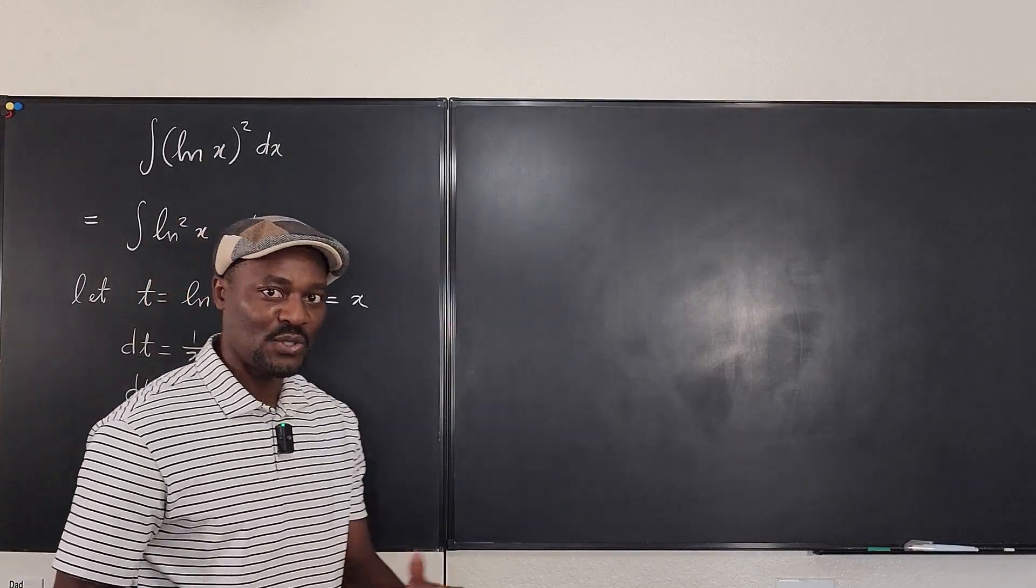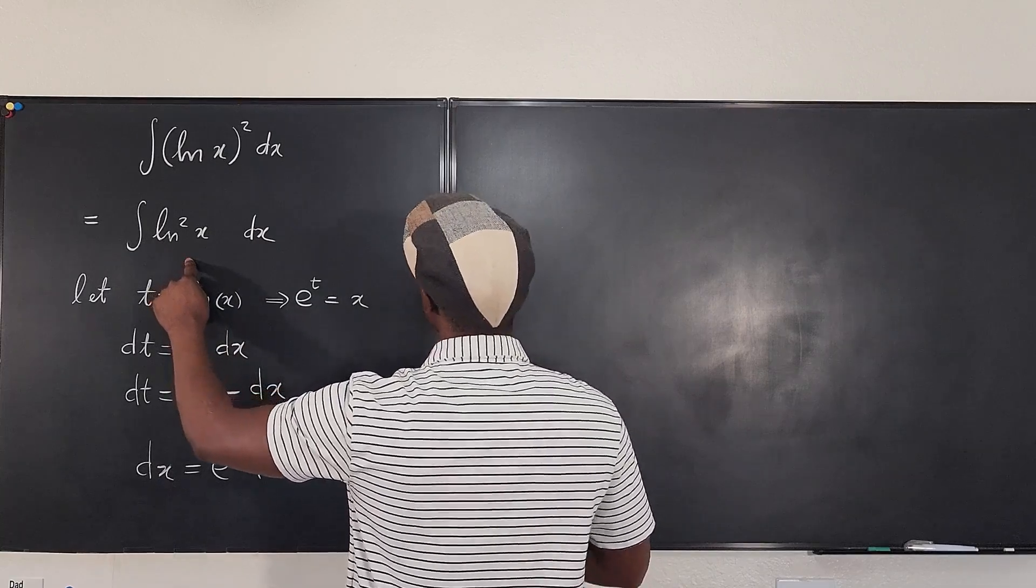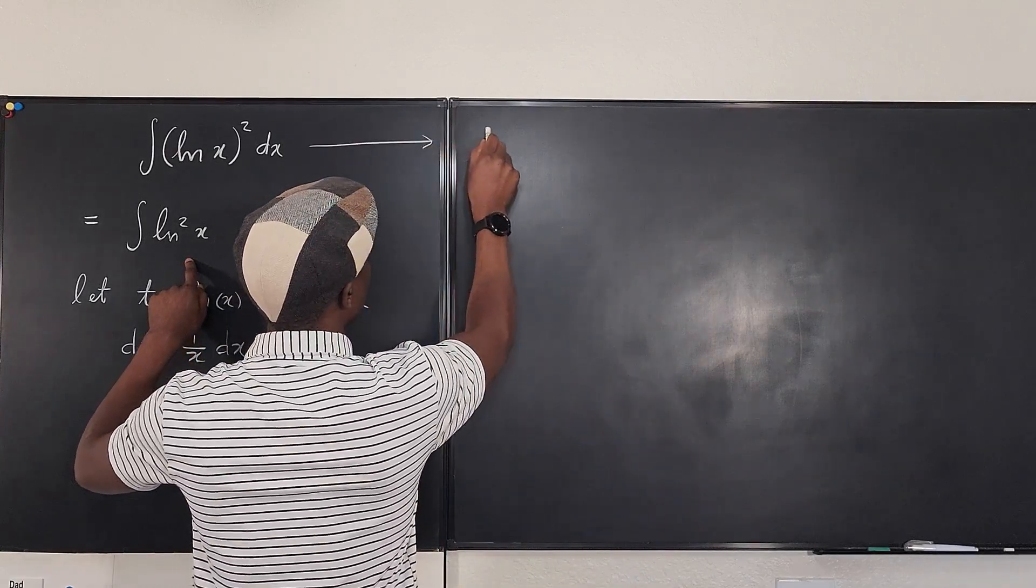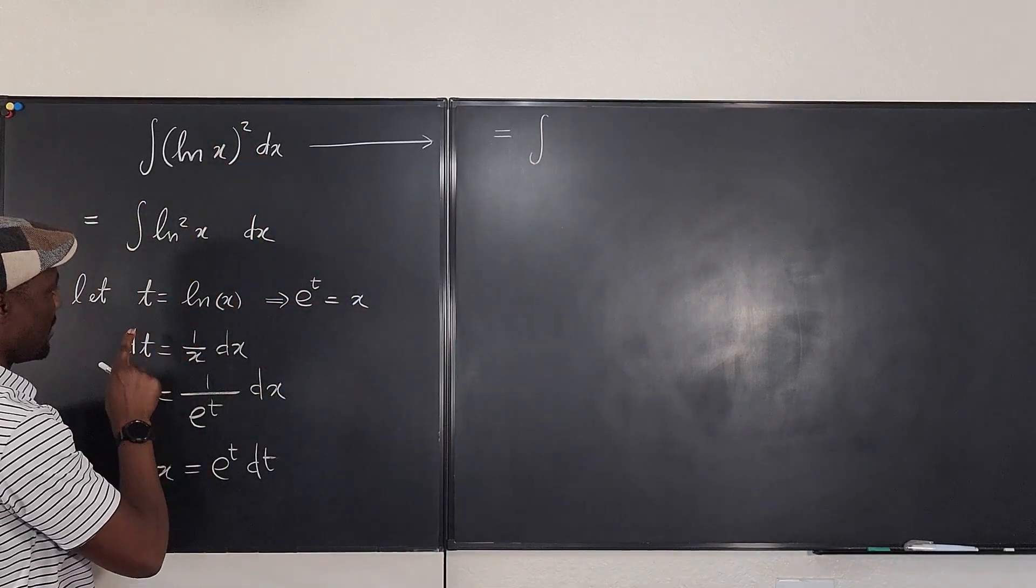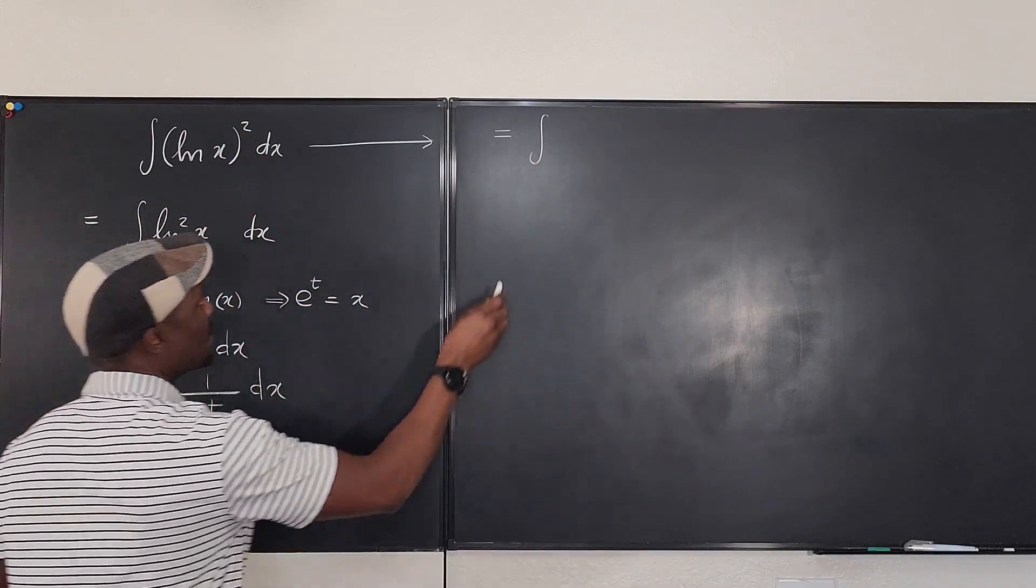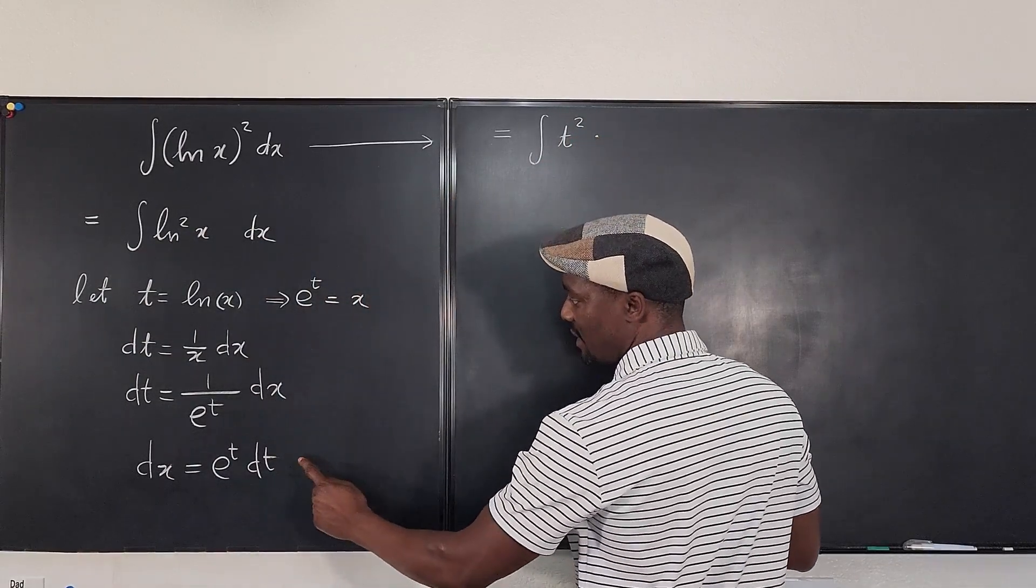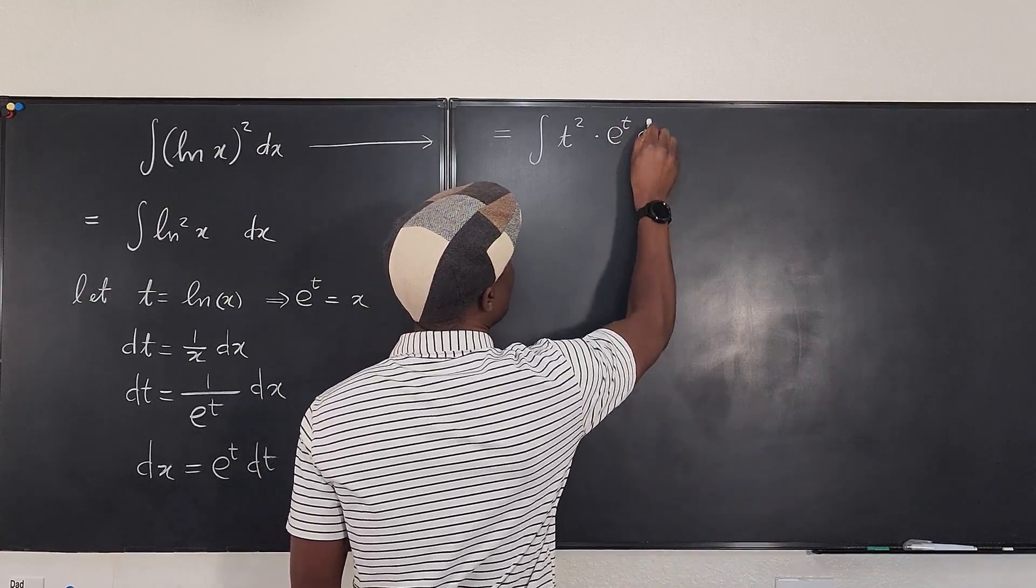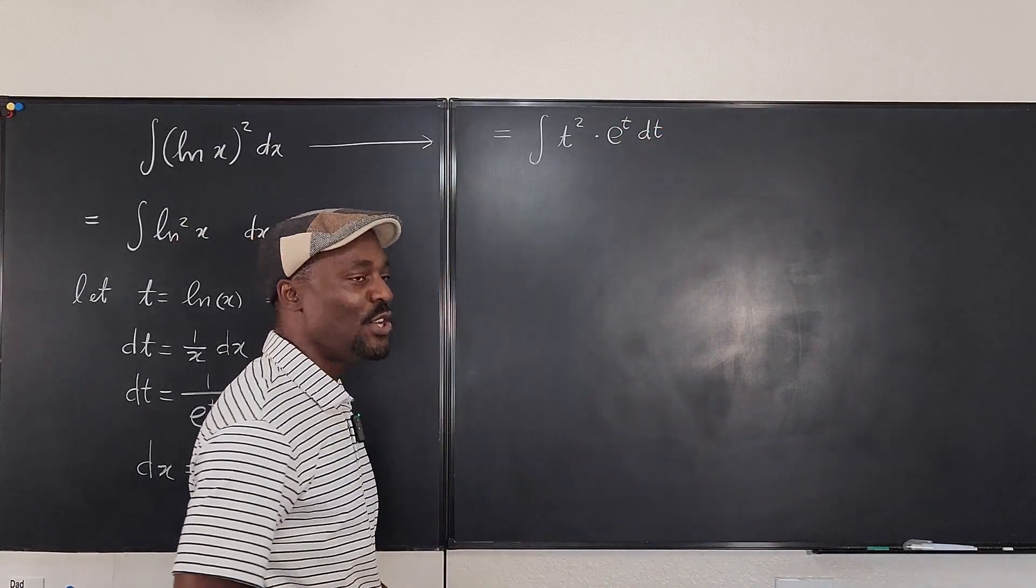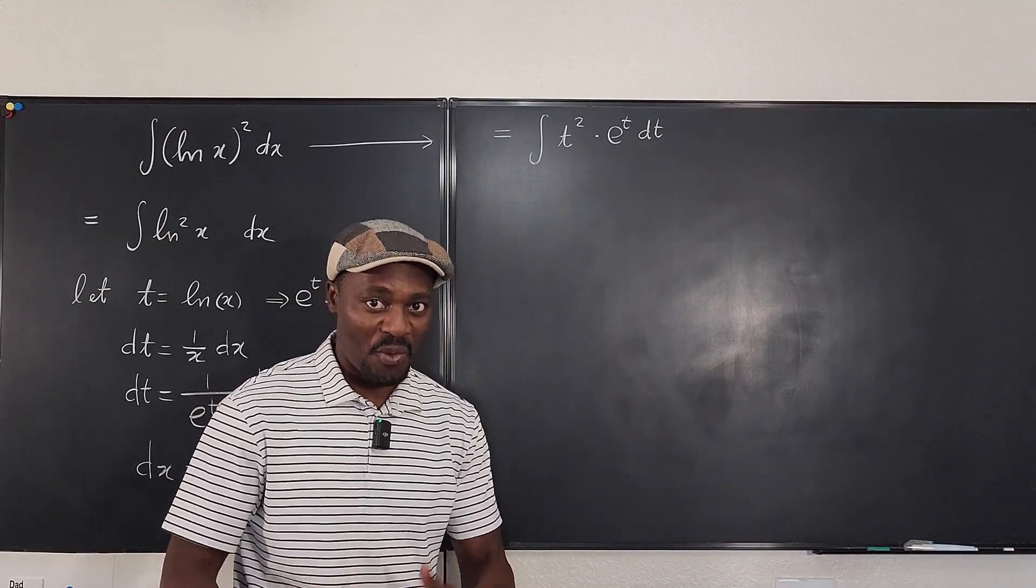So now I'm ready to do my integration. This is going to be the integral of ln of x squared. What's ln of x again? It's t. So it's going to be t squared times what is my dx. dx is e to the t dt. So it's e to the t dt. So now I have a new problem, which obviously looks easier to solve.